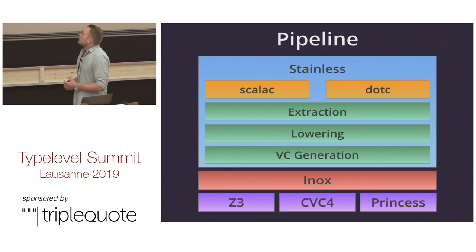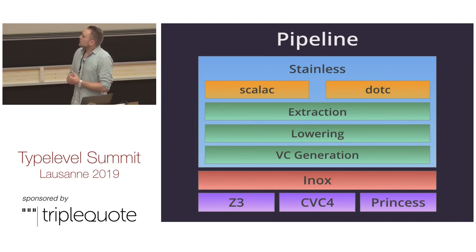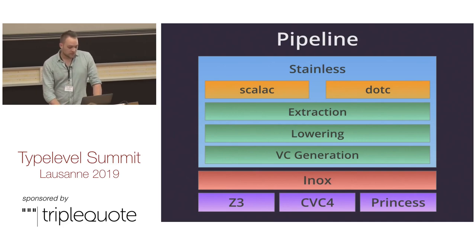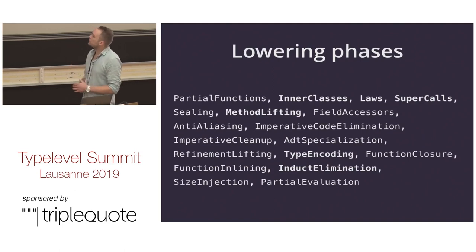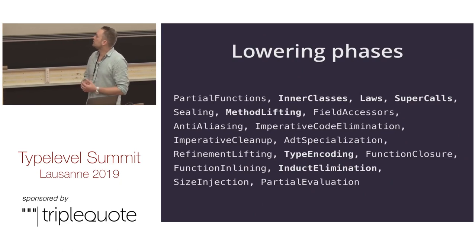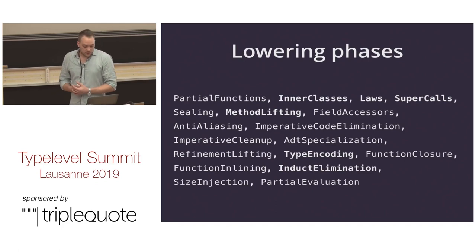Stainless works in the following way: we call into ScalaC or Dotty C to parse and type-check programs, then extract them into our own internal AST, which we lower down to a much simpler language from which we generate verification conditions that are passed to Inox — a solver that does a lot of heavy lifting for us. Inox itself calls into Z3, CVC4, or Princess, which are SMT solvers. There are a bunch of small phases within Stainless dealing with inner classes, laws, super calls, method lifting, and type encoding.